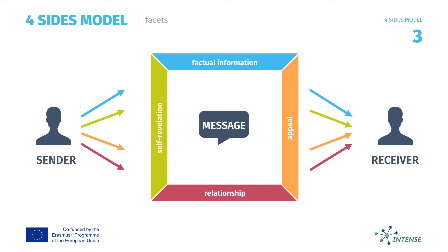Fourth, there's the layer of relationship: what does the sender tell about the relationship between him or her and the receiver, and on the other hand, what did the receiver hear? As you may suspect, the receiver could hear very different things from what the sender is actually telling.